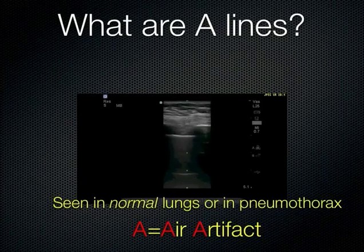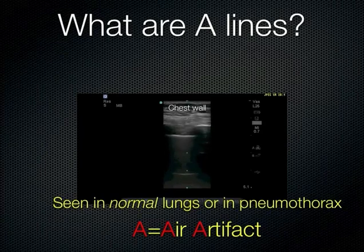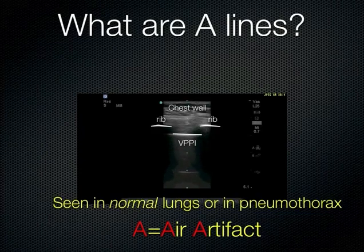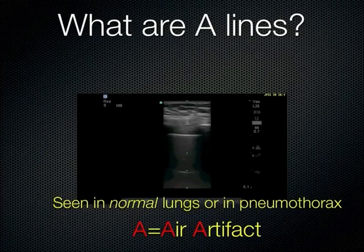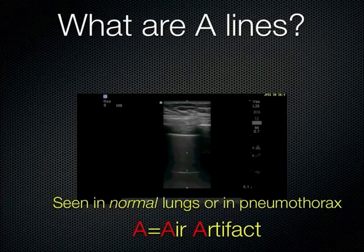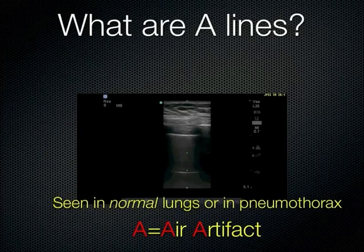Looking at the image: this is the chest wall, the ribs with their bright white cortex, and the pleural line or VPPI just below — usually about half a centimeter below the ribs depending on body habitus. Below that you see the A-line, which is a reflection of the pleural line appearing deeper. That's artifact — not really there. It's because ultrasound waves got trapped at the pleural line due to the very different acoustic impedance of the air right underneath it, setting up resonance. You'll notice A-lines are spaced equidistant — the spacing from chest wall to VPPI is the consistent spacing you'll see.